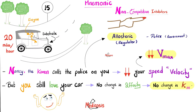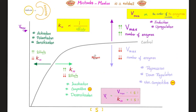Next is the non-competitive inhibitor, Nancy the Karen. You, the enzyme, were driving your car, the substrate, down the road. The speed limit was 15, you were driving at 20. Nancy started yelling at you and said she is going to call the cops. After hearing this, your speed will go down. Vmax will decrease. But you still love the car, so affinity has no change.